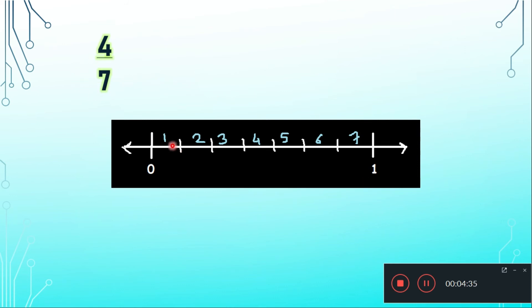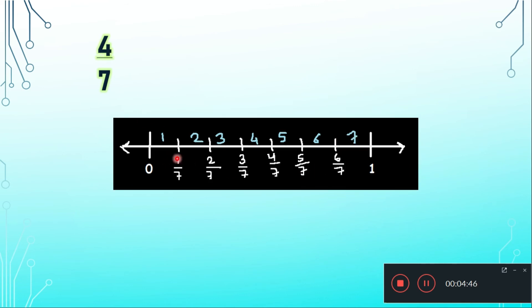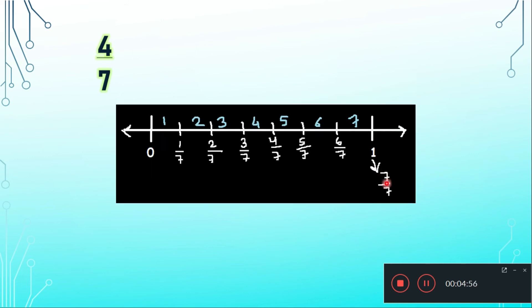So I have divided it into 7 equal parts. This is part 1, part 2, part 3, part 4, part 5, part 6, and part 7. Now we will write down these numbers as 1 by 7, 2 by 7, 3 by 7, 4 by 7, 5 by 7, 6 by 7. What about this 1? It will be 7 upon 7, and if we divide 7 by 7 we will get 1.